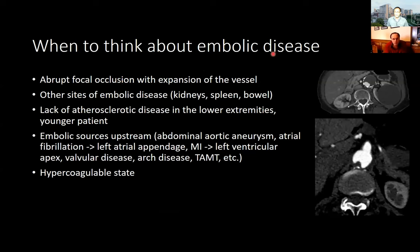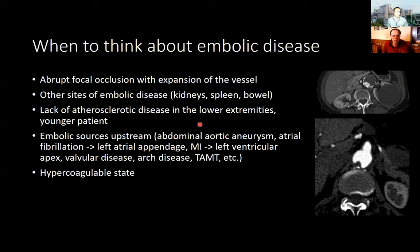Key features when thinking about embolic disease: abrupt focal occlusion — occasionally the vessel may be expanded — looking for infarcts in kidneys and spleen on the non-vascular portion of the CT, lack of atherosclerotic disease or a younger patient, and looking for embolic sources upstream. If we know prospectively that the concern is embolic disease, it makes sense to add a chest CT at the same time — a chest CTA plus runoff — to allow assessment for an embolic source.